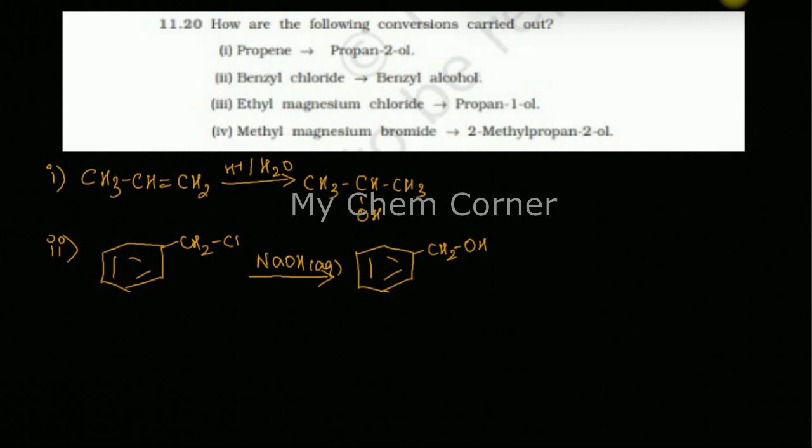Third one is ethyl magnesium chloride. Let's follow the reaction: ethyl is C2H5-MgCl to propan-1-ol, so this will be CH2-CH2-CH2-OH. You need to get this reaction. How are you going to get this? If you see, you have only C2H5 over here but you have three carbons here. There is one carbon coming from along with the oxygen.